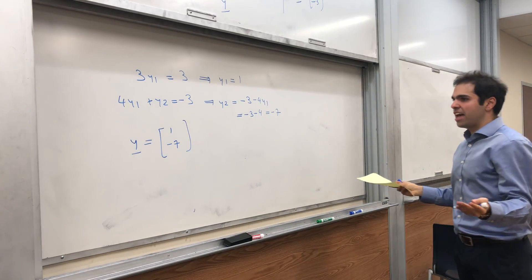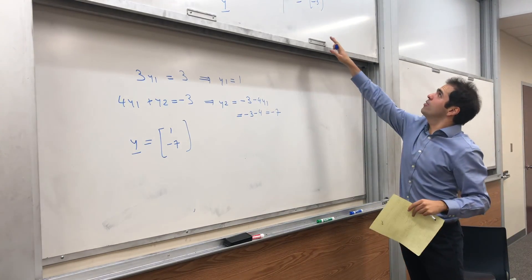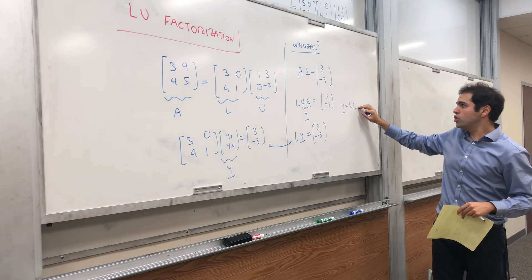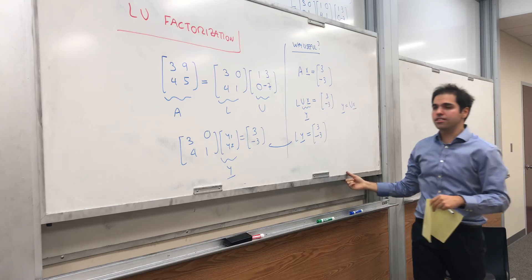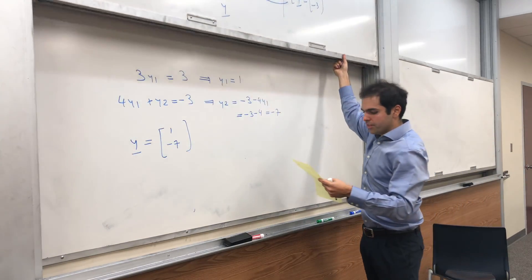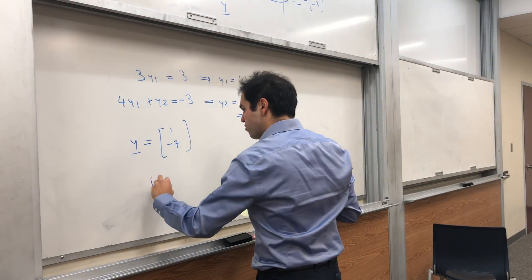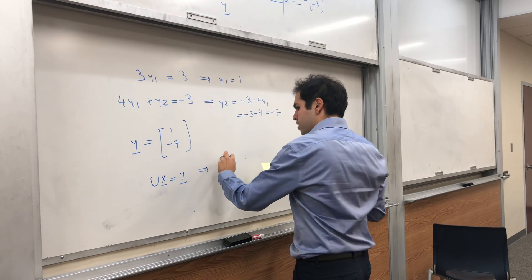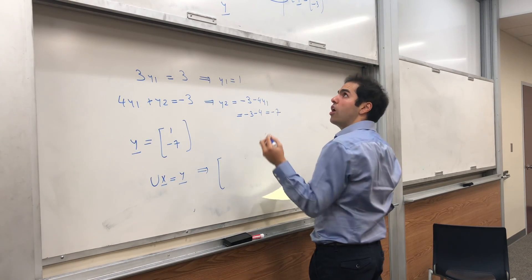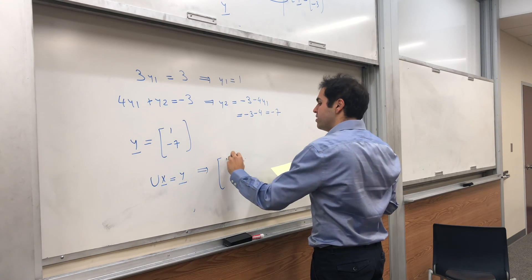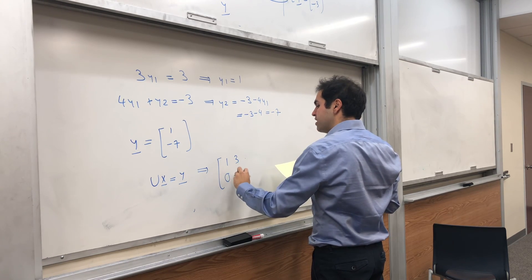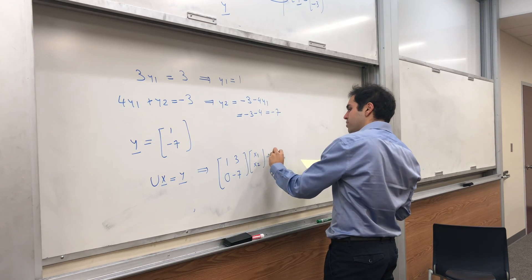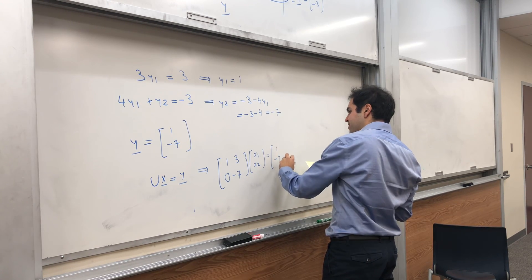The question is now, what is X? But, remember what X was. Y was just UX. So, you just solve X using this equation. So, in other words, UX equals Y. And, now, remember that U is upper triangular. So, it's also easy to solve. 1, 3, 0 minus 7. Say, X is X1, X2. Equals 1 minus 7.